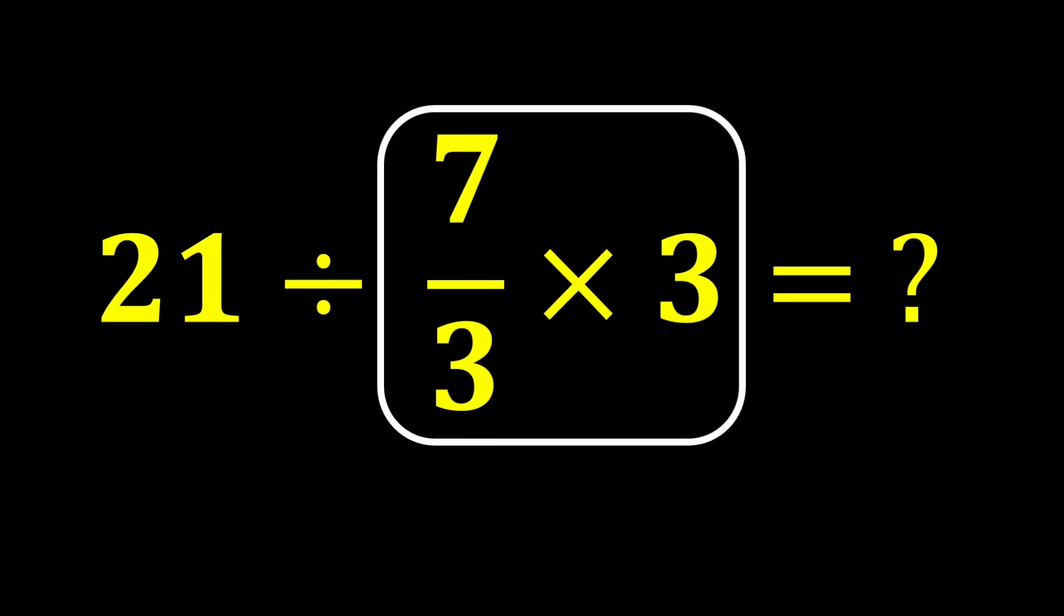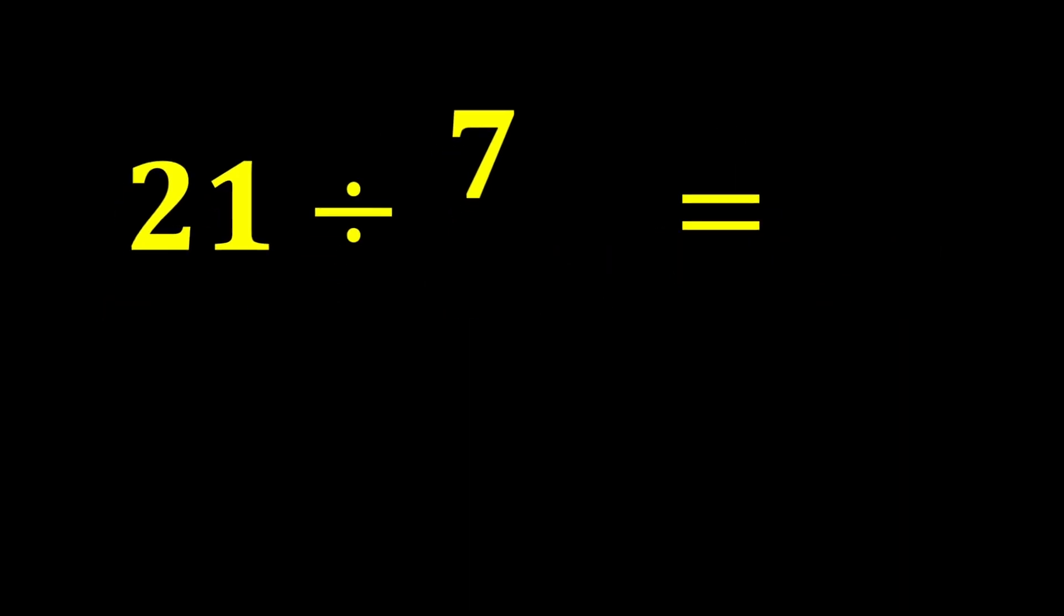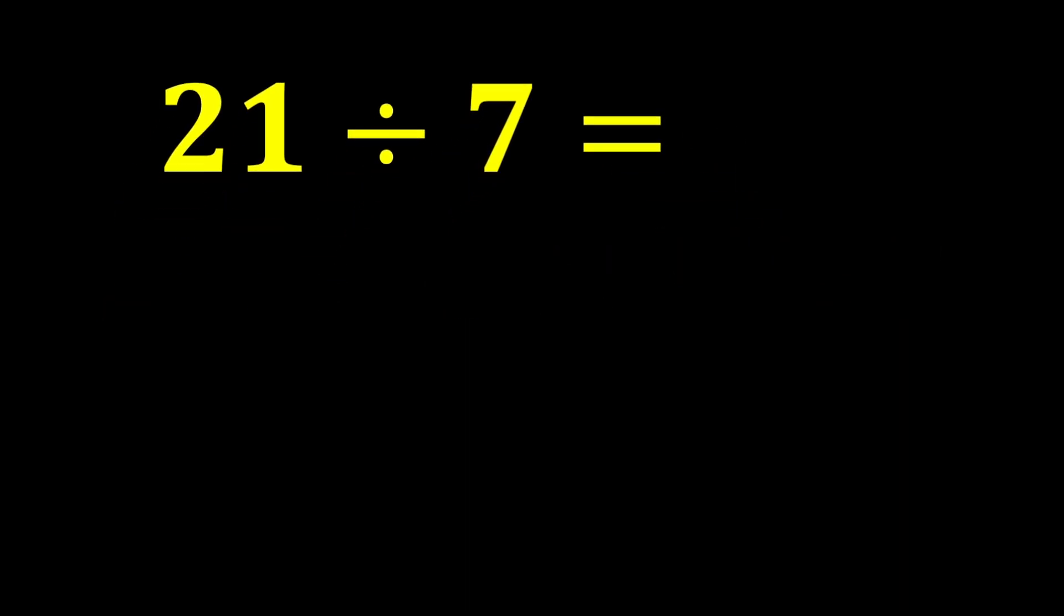First, we perform this multiplication, 7 over 3 multiplied by 3. The 3's cancel each other out, and only 7 remains. In the end, 21 divided by 7 gives us 3.